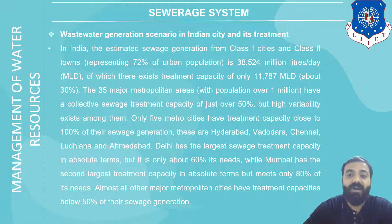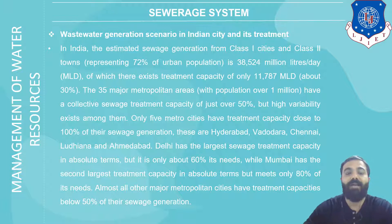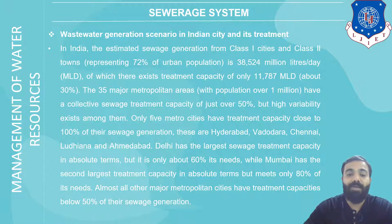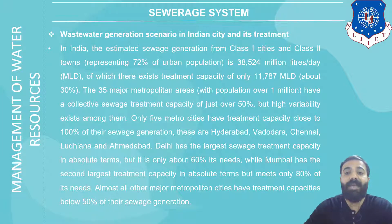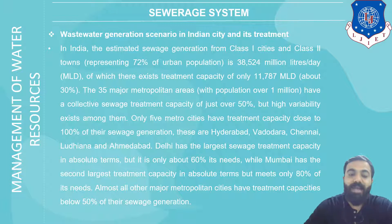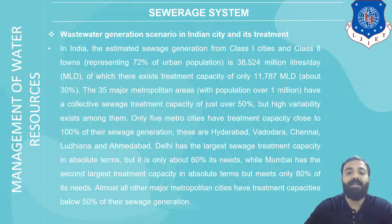This is about 30% of the facilities provided for the treatment of waste water. The major 35 metropolitan areas have a collective sewage treatment capacity of just over 50%, but high variability exists among them. Only 5 metro cities have a treatment capacity close to 100% — those are Hyderabad, Baroda, Chennai, Ludhiana, and Ahmedabad. Delhi has the largest sewage treatment capacity in absolute terms, but it is only 60% of its rated capacity.